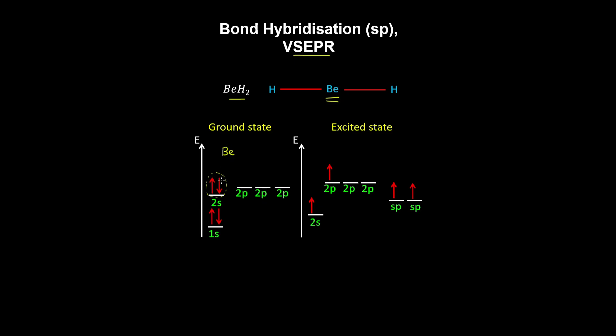Now if this atom is excited, an electron jumps to the 2p orbital, as shown here in the excited state, and these bonds between the beryllium and hydrogen are identical.